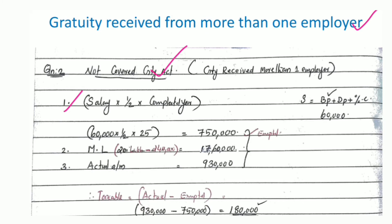The formula is: 1/2 × completed years × salary. The salary here is basic pay plus dearness allowance plus percentage of commission. For the Gratuity Act not covered cases, that is how the salary component is defined.